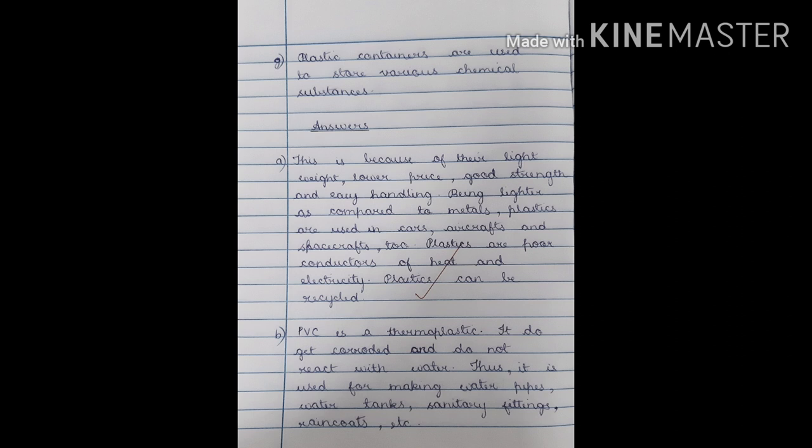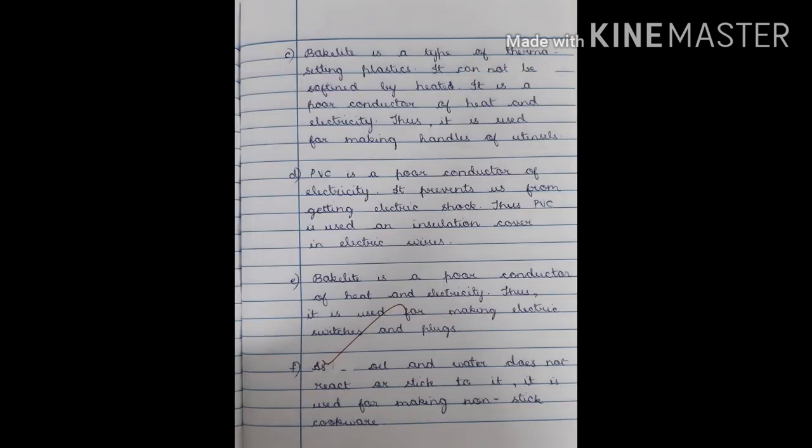Answer B: PVC is a thermoplastic. It does not get corroded and does not react with water, so it is used for making water pipes, water tanks, sanitary fittings, and raincoats. Answer C: Bakelite is a type of thermosetting plastic. It cannot be softened by heat and is a poor conductor of heat and electricity, so it is used for making handles of utensils. Answer D: PVC is a poor conductor of electricity and prevents electric shock, so it is used as insulation cover in electric wires.